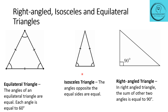In the case of an isosceles triangle, we know two sides will measure the same, and the angles opposite the equal sides will be equal. So the angle opposite this side and the angle opposite this side will be equal. These are the properties of an isosceles triangle.